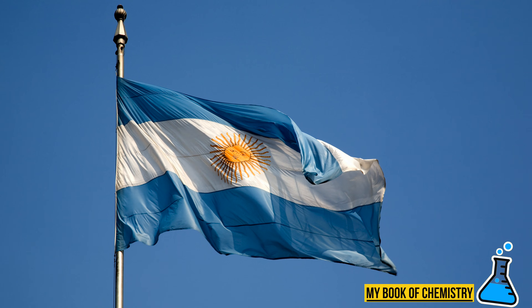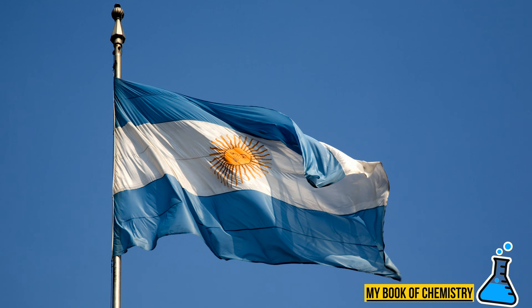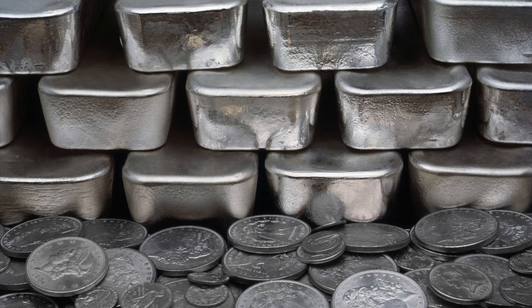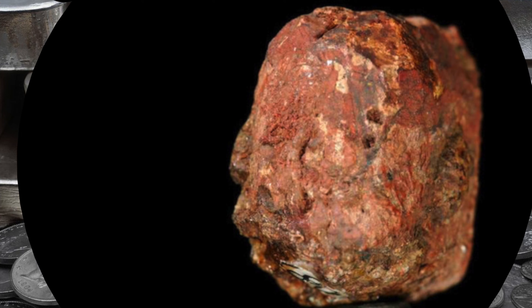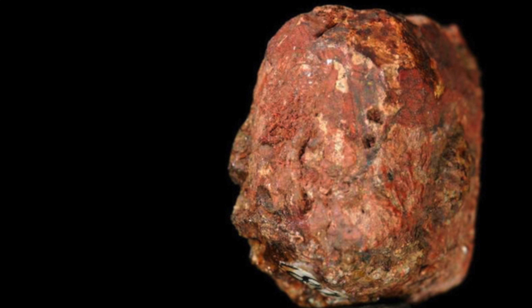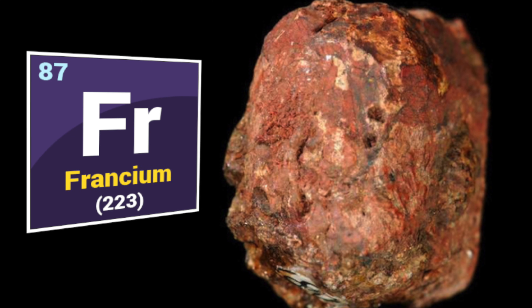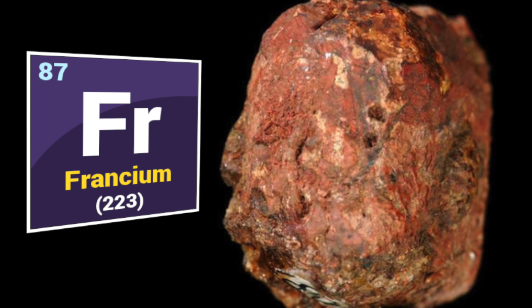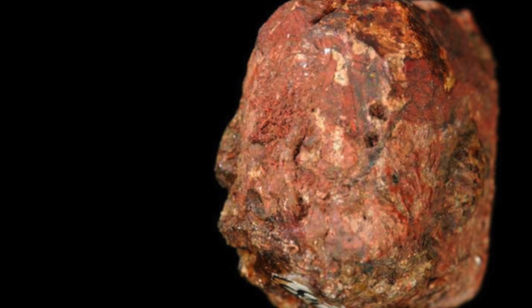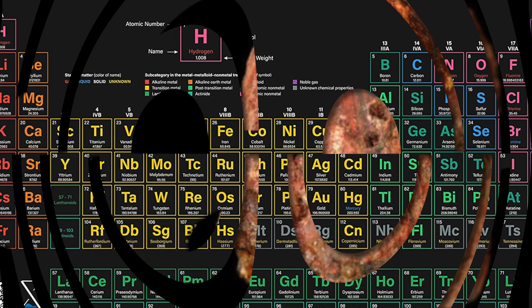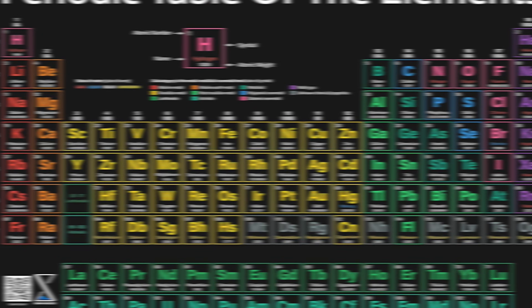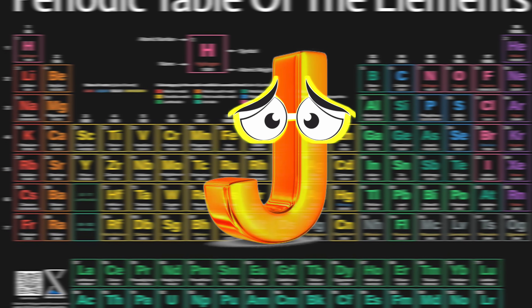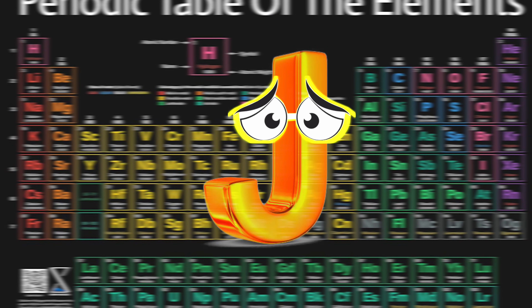The country Argentina is named after the element silver — the Latin word for silver is Argentum. Francium is the rarest element on earth, with probably no more than a few ounces present. The only letter of the alphabet not used in the periodic table is the letter J. Now these are just a few fun facts about the periodic table.